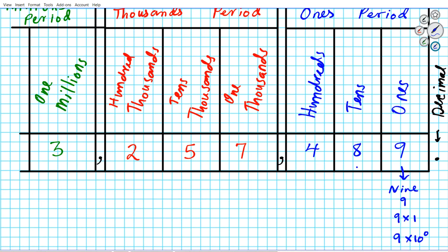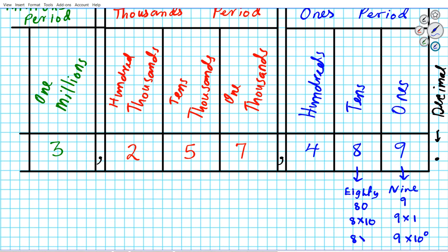Moving along to the tens place: eight is in the tens place. The name is 80. In symbolic form it's 80 as a number. In expanded form without exponents, it's eight times ten. In expanded form with exponents, it's eight times ten to the first power.